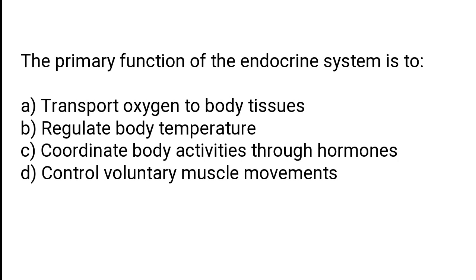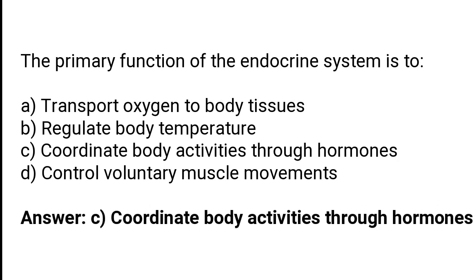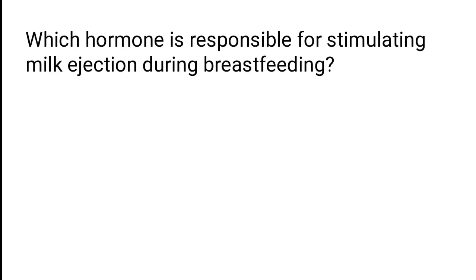The primary function of the endocrine system is to transport oxygen to body tissues, regulate body temperature, coordinate body activities through hormones, or control voluntary muscle movements. The correct answer is option C: the primary function of the endocrine system is to coordinate body activities through hormones.